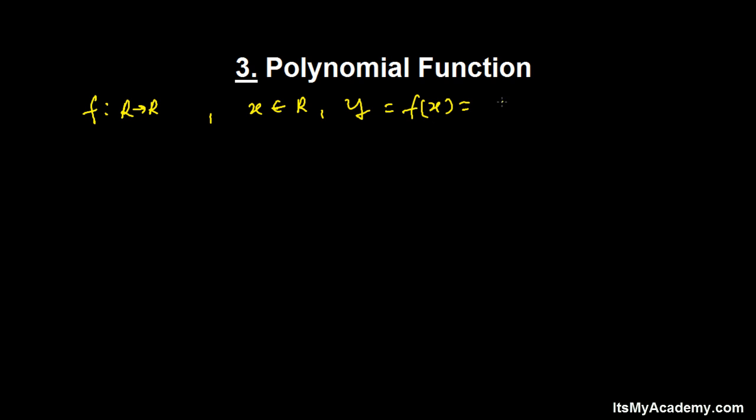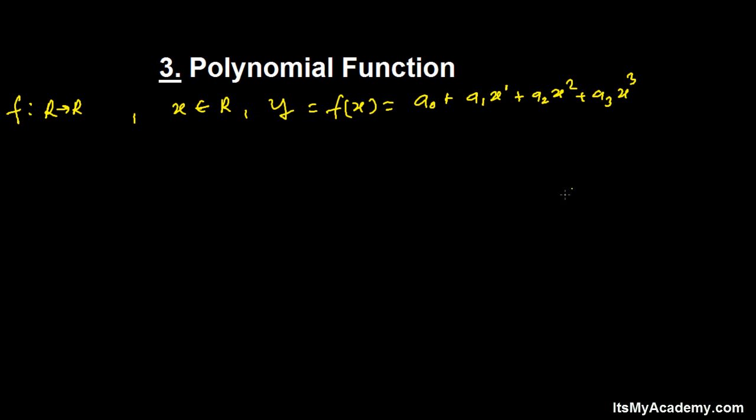to f(x), which is something like a₀ + a₁x + a₂x² + a₃x³ and similarly up to aₙxⁿ, where you need to keep in mind that n is always some positive integer. It can be any positive integer.